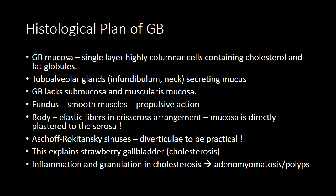Now the histological plan of the gallbladder. All of the GIT is made up of 4 layers: the mucosa, which contains the epithelium, the basement membrane and the lamina propria; the submucosa, which mainly contains collagen, elastin, blood vessels, lymphatics and nerves; the muscularis, which contains inner circular and outer longitudinal muscle; and finally the serosa.